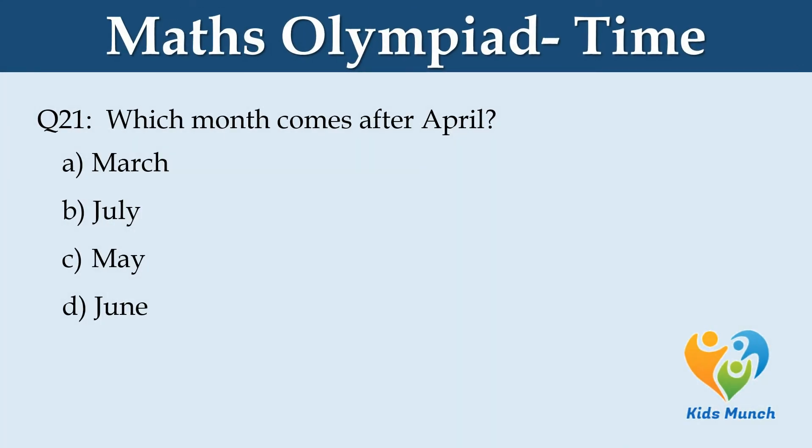Which month comes after April? Option A: March. Option B: July. Option C: May. Option D: June.